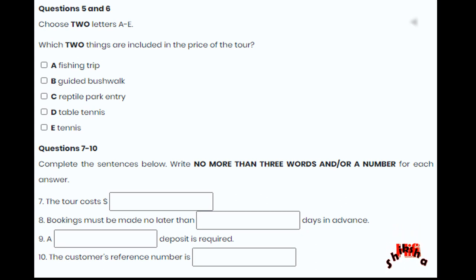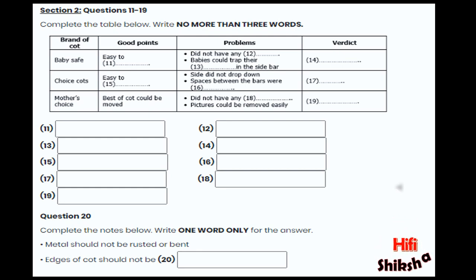That is the end of section one. You now have half a minute to check your answers. Now turn to section two. You will hear a radio programme giving parents advice about buying cots for their babies to sleep in. First, you have some time to look at questions 11 to 17.